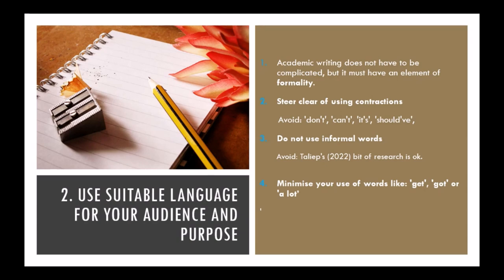These are examples of how to avoid the 'I' language and substitute it with academic writing — instead of saying 'I feel,' you could say 'From examining the findings.' Instead of 'I am convinced,' say 'Considering the results, it is clear.' The second key point is to use suitable language for your audience and purpose. Academic writing does not have to be complicated, but it must have an element of formality. It is very important to use language that fits your audience and matches purpose — an inappropriate language choice can damage your credibility, undermine your argument, or alienate your audience.